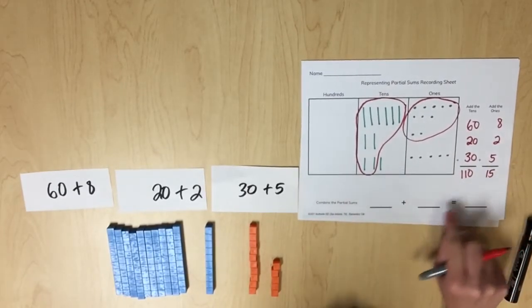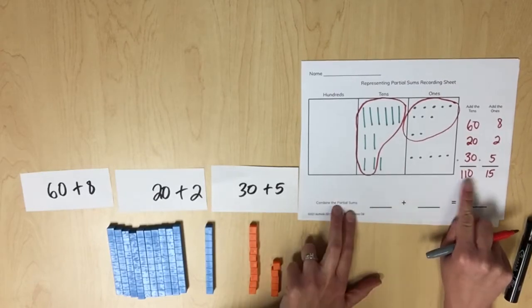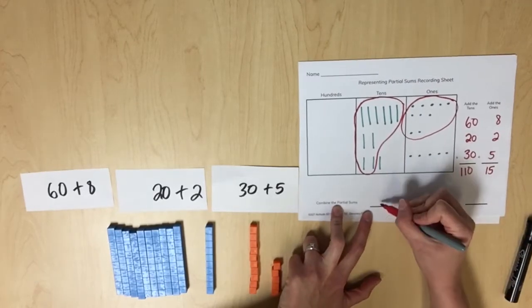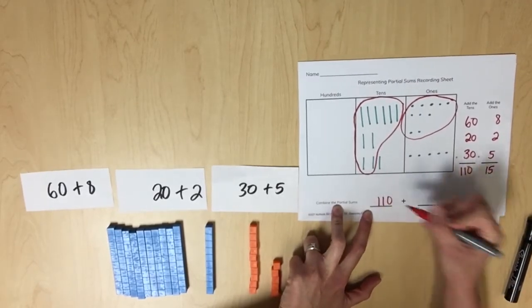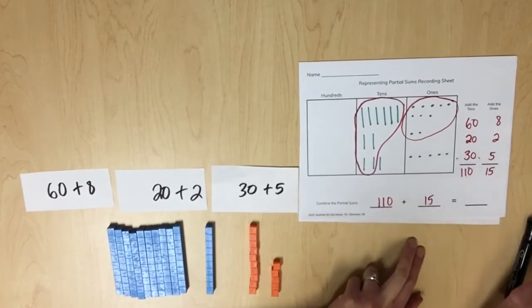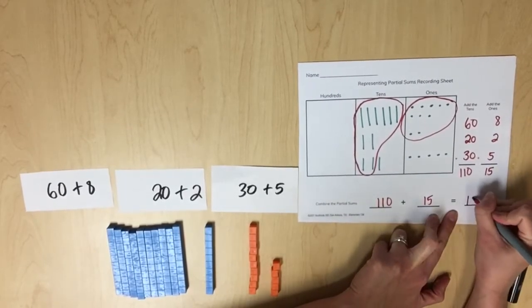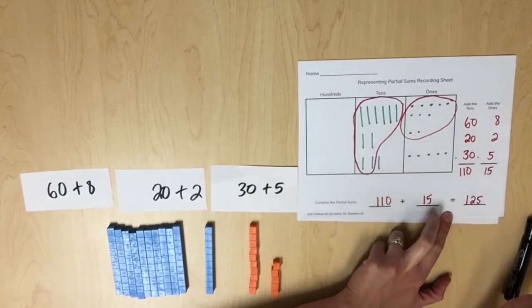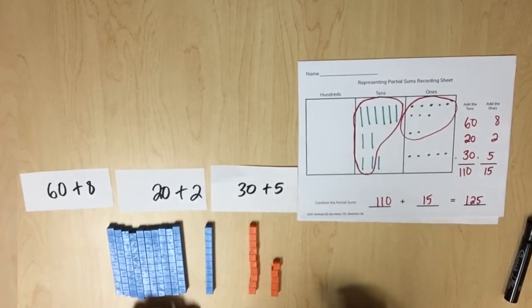Now we're going to combine the partial sums of the tens and the ones to determine the number of cards Carlos had in his collection. 110 plus 15 is 125. Carlos had 125 cards in his collection.